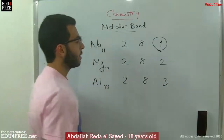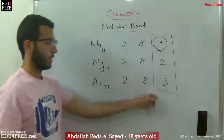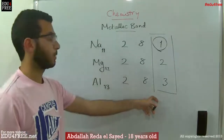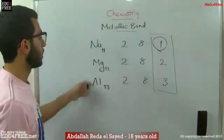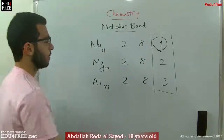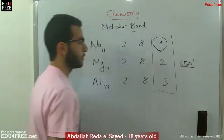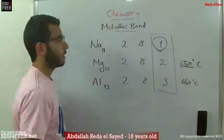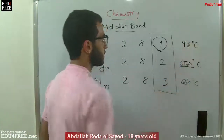The number of electrons in the outermost energy level is directly proportional to the strength of the metallic bond. We can see a variety in the melting points of these elements. For example, magnesium melts at 650 degrees Celsius, and aluminum at 660 degrees Celsius, while sodium melts at 98 degrees Celsius.